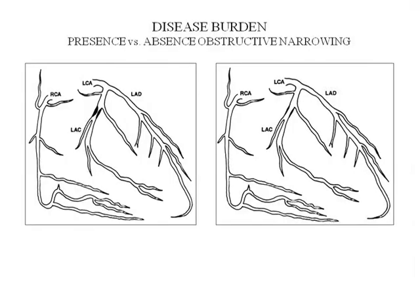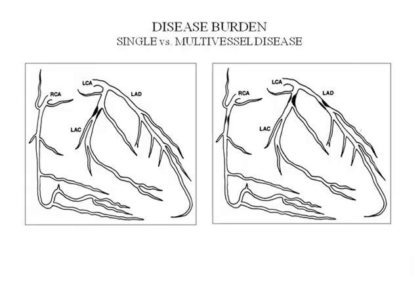We've already demonstrated that the carotid IMT, to some degree, can differentiate between individuals with flow-restrictive coronary disease and individuals with mild disease. In addition, the greater the IMT parameter, the greater is the likelihood that you'll have multivessel coronary disease as opposed to single-vessel disease. However, we've discussed that the coronary angiogram is really no longer the gold or platinum standard.